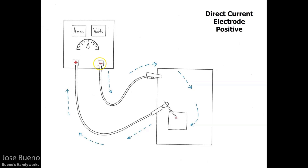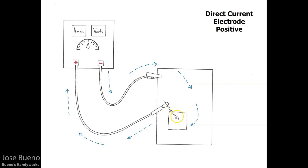Starting with the negative terminal, if we follow this, we see that there is a cable attached, and the cable leads to our ground clamp. This is our ground cable. The ground cable and ground clamp can be attached to the table that you're working on, or attached to whatever piece of metal that you're welding for a better ground. If we double back and start with the positive terminal and follow that cable, we see that it's attached to our electrode holder, which has an electrode in it with an active welding arc.